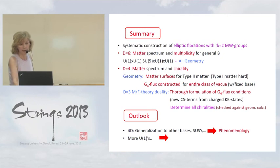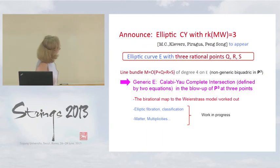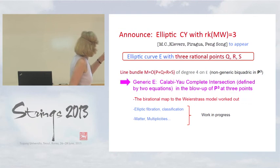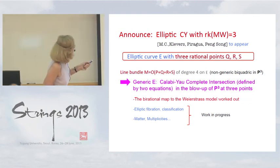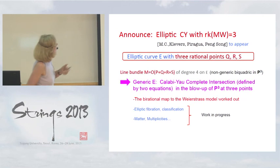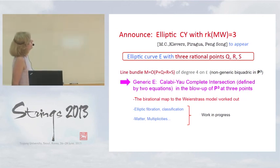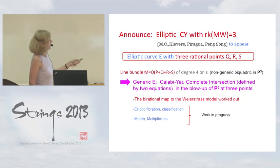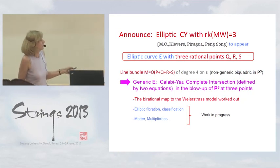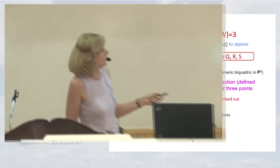Another more formal direction is to develop techniques for more than two U1s. We are currently in the process, with graduate student Peng Song, of finding rank 3 Mordell-Weil Calabi-Yau manifolds, and as a consequence we have complete interpretation of the corresponding elliptic curve.